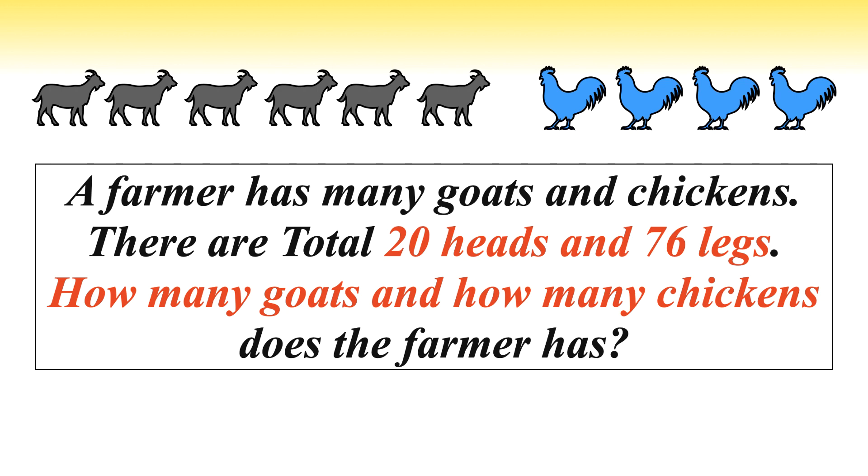Let me repeat the puzzle. A farmer has many goats and chickens. There are total 20 heads and 76 legs. How many goats and how many chickens does the farmer have?